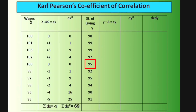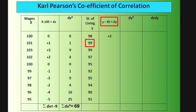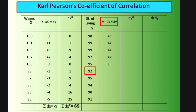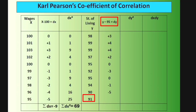For the dy column, the assumed mean A = 95, so dy = y − 95: 98−95=3, 99−95=4, 99−95=4, 97−95=2, 95−95=0, 92−95=−3, 95−95=0, 94−95=−1, 90−95=−5, 91−95=−4. The plus values sum to 13 and minus values also sum to 13, so Σdy = 0.